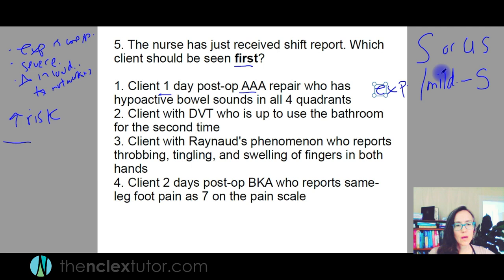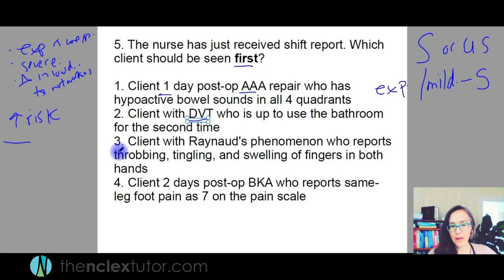Client with a DVT who is up to use the bathroom for the second time. A DVT is a blood clot in the leg. Are they allowed to be up? They're not giving me any sign and symptom data showing an immediate complication. What you're worried about with DVT is it breaking loose and causing a pulmonary embolism. There is a risk, and if they're moving around a lot that could be more likely to happen. I'm going to question that one — I like it better than number one.